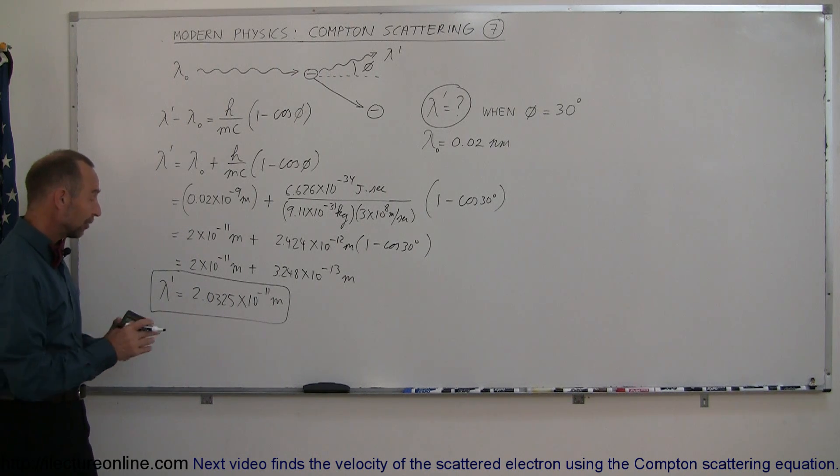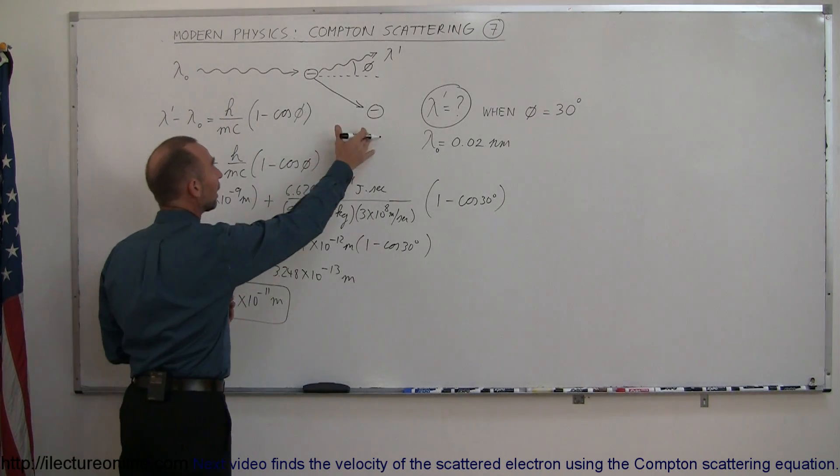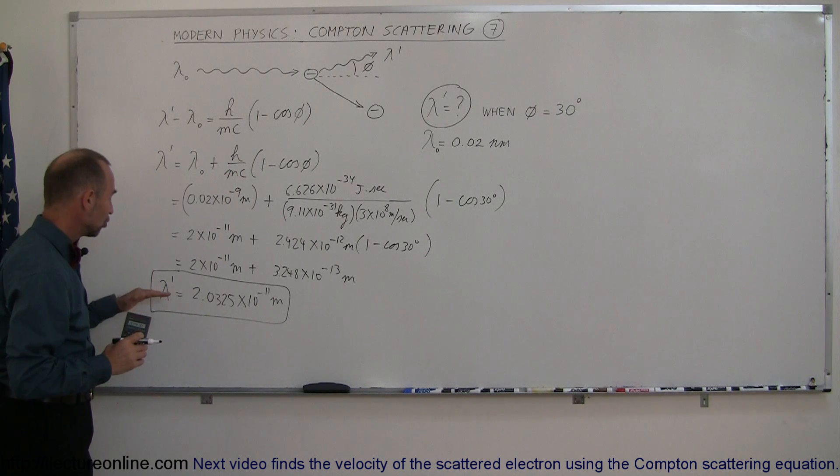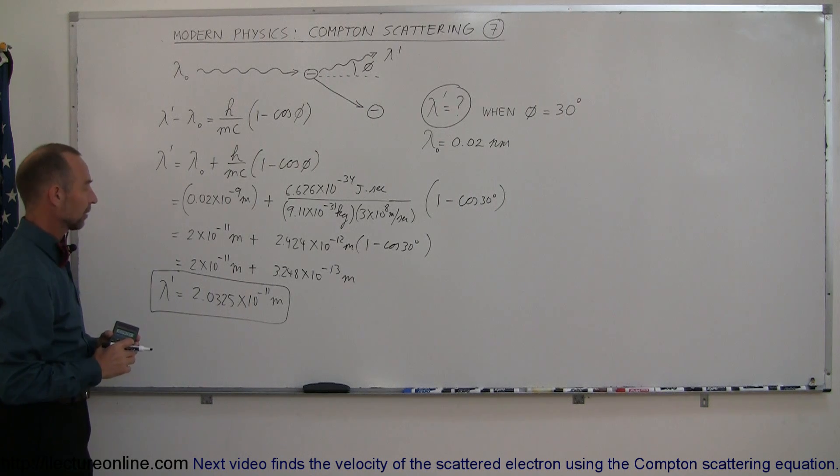It doesn't seem like a lot, but the photon has definitely lost energy, and that energy is imparted on the electron. So that's how you calculate the change in wavelength and the final wavelength after a photon has scattered off an electron.